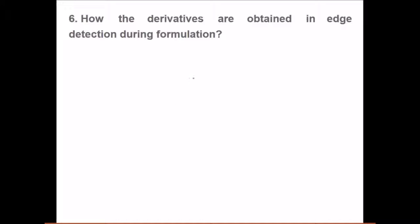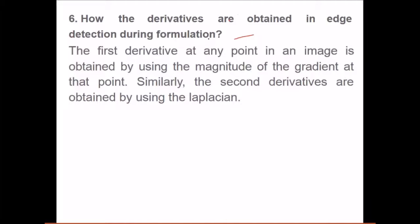How are derivatives obtained in edge detection? The first derivative at any point in an image is obtained by using the magnitude of the gradient at that point, del y by del x. Second derivatives are obtained by using the Laplacian, del squared y by del x squared. First gradient, then Laplacian.